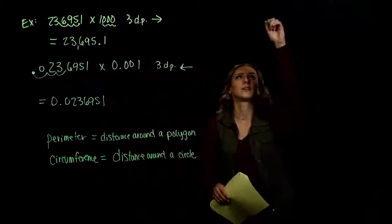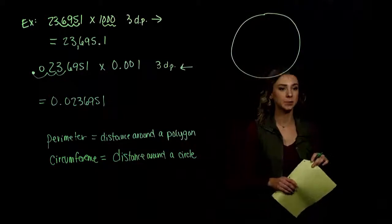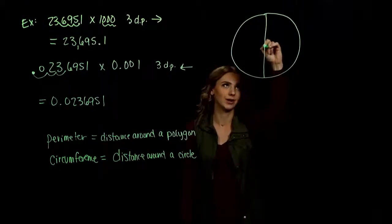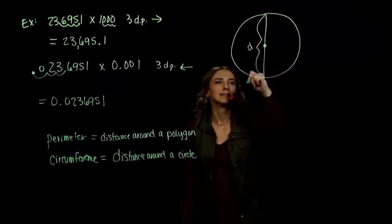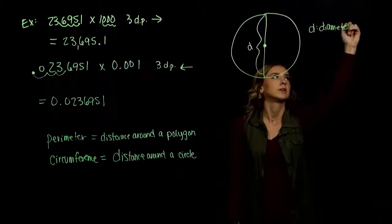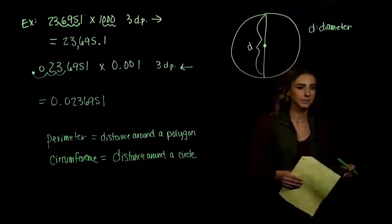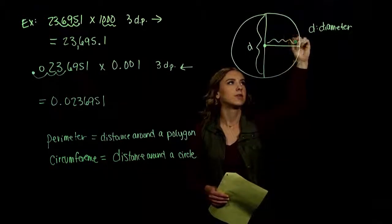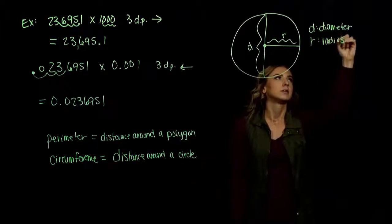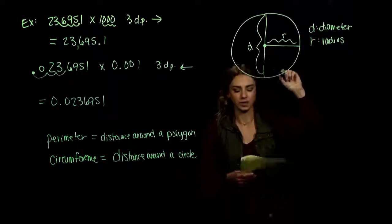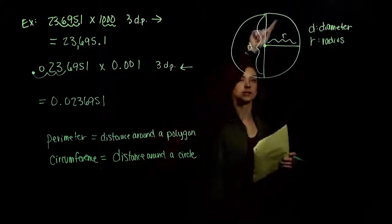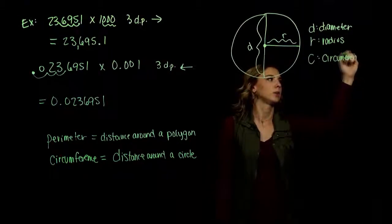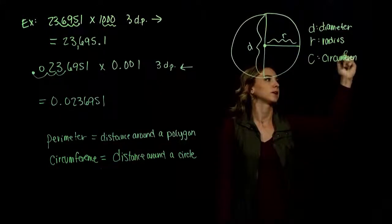Let's draw a circle and label each of the pieces. Our distance all the way across, from end to end of the circle through the center, is called the diameter, represented with D. The diameter is the distance all the way across. But if we start from the center and travel out to the side — not spanning the entire circle, just from the center out, half of it — this is called the radius, represented with R. So the diameter is the distance all the way across; the radius is just from the center out.